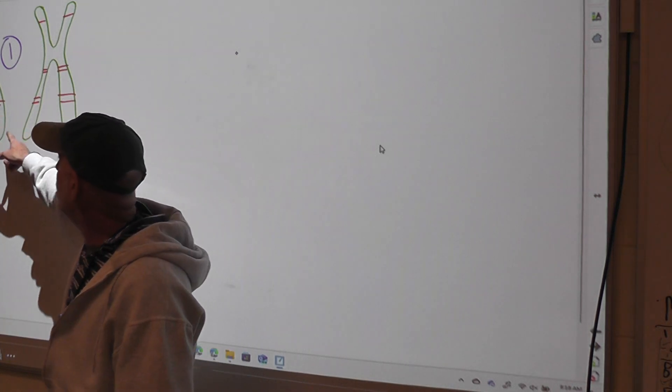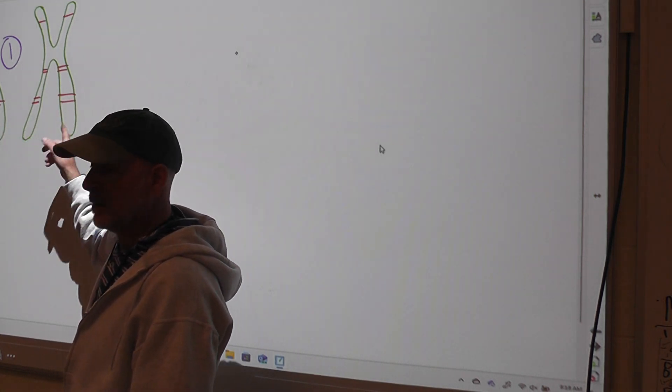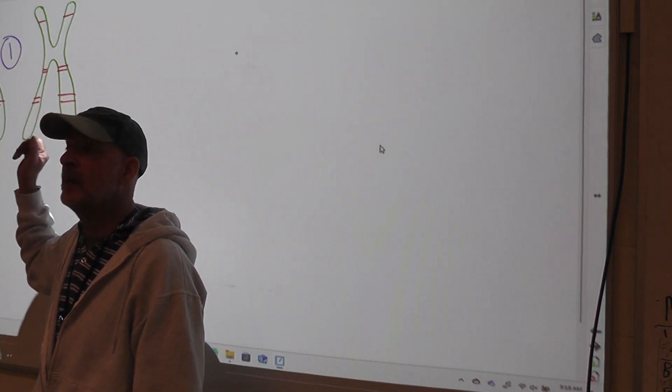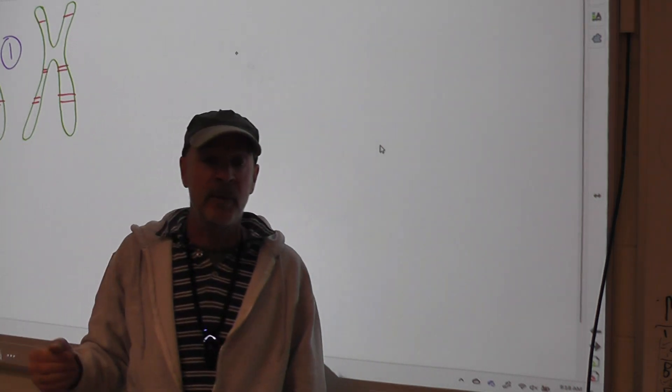This is what it would look like. You're going to have two chromosomes that look identical, and they will have identical banding patterns. This is roughly what it would look like under a microscope.